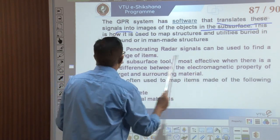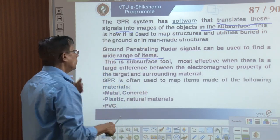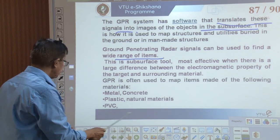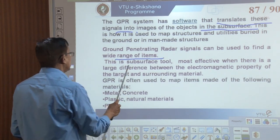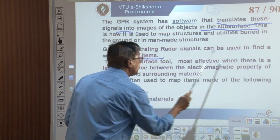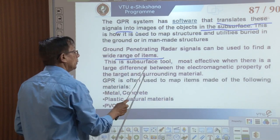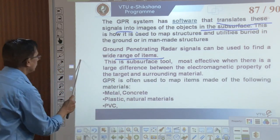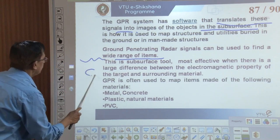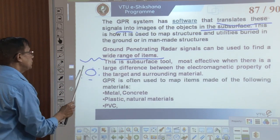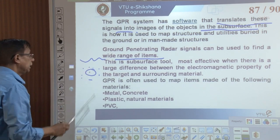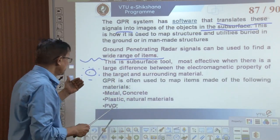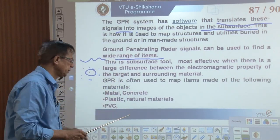GPR signals can be used to find a wide range of items — materials like concrete, metal, plastic, natural materials like PVC. GPR is most effective when there is a large difference between the electromagnetic properties of the target and the surrounding material. If the target material and the surrounding have a significant difference in their electromagnetic properties, it is very easy to identify what the object is. If there is no difference, it becomes difficult to resolve.